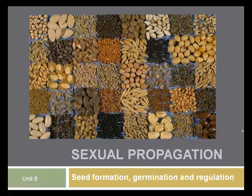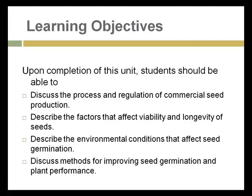Hello, this is Jeff Weiss with material on sexual propagation, Unit 6 in the Introduction to Horticulture, talking about seed formation, germination, and regulation. Upon completion of this unit, you should be able to discuss the process of propagating and the regulations around commercial seed production, the factors that affect the viability and longevity of seeds especially in storage, describe the environmental conditions that affect seed germination, and discuss methods for improving seed germination and plant performance.